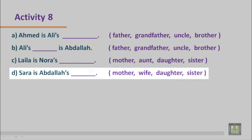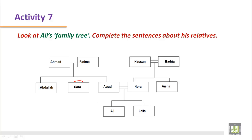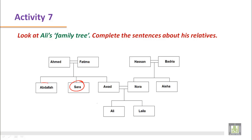Sentence number D: Sarah is Abdullah's — mother, wife, daughter, or sister. What is the relationship between Sara and Abdullah? This is Sara and this is Abdullah. The family tree shows that Sara is Abdullah's sister.